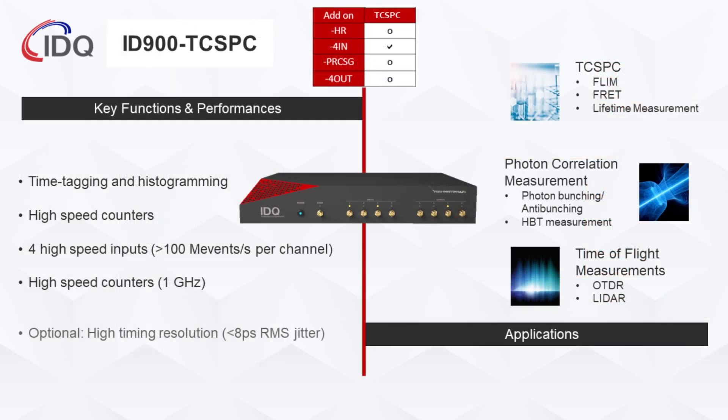The ID900TC SPC is designed for time-correlated single-photon counting measurements, and it has the same functionality as a classical time-tagger, enabling you to use the four inputs for histogramming, time-tagging, and counting. It is optimized for dedicated TC-SPC applications such as FLIM, FRET, lifetime measurement, or other photon-correlation measurements including photon-bunching/antibunching or Hanbury-Brown-Twiss measurements.